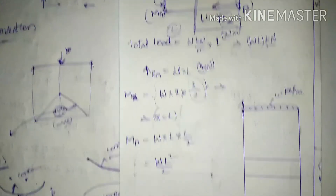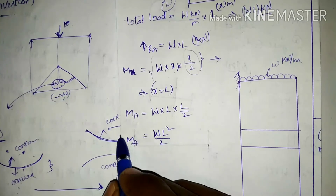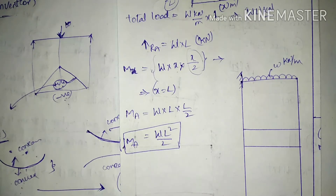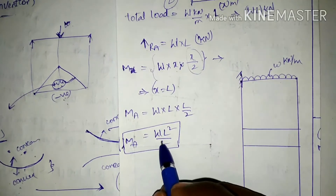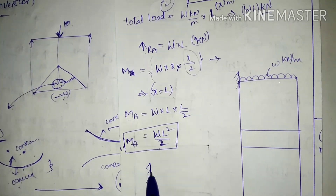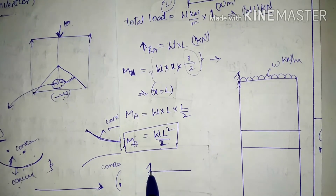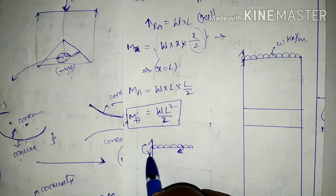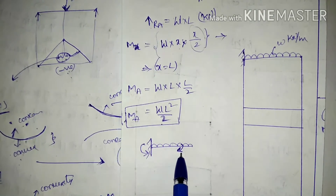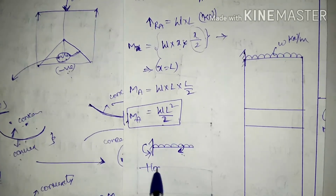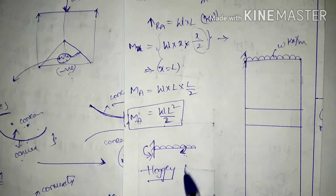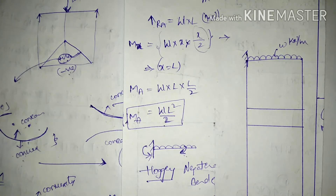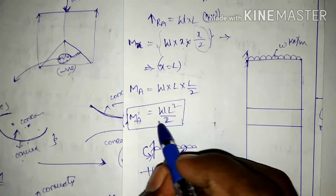The moment about A equals WL²/2. Considering bending moment conventions — the UDL causes an anti-clockwise moment on both sides of the section, so it is a hogging moment, which is negative. Therefore MA equals minus WL²/2.